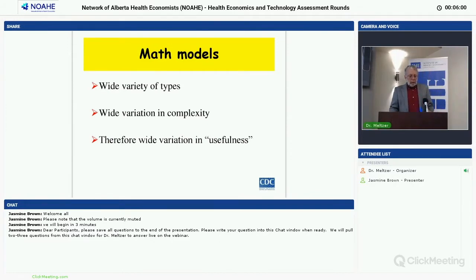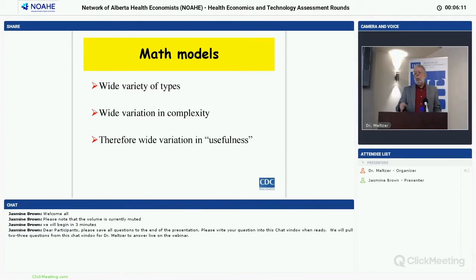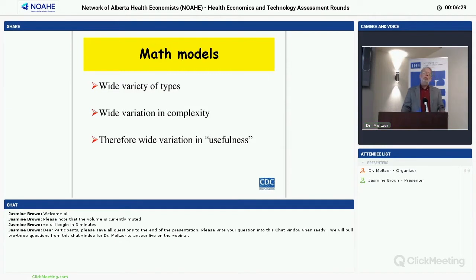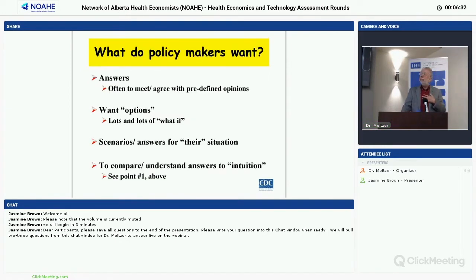People not well-trained in math models spend a lot of time being amazed at the jargon used to describe different models. There's a wide variation in complexity, and therefore a wide variation in usefulness. And usefulness — we don't decide what's useful. The key part is that our clients decide. I run what I consider almost like an internal consulting shop. People come to us with problems; we work with them.